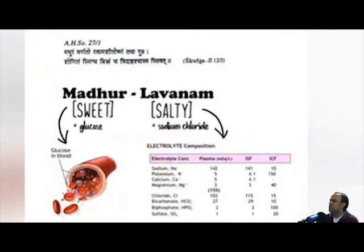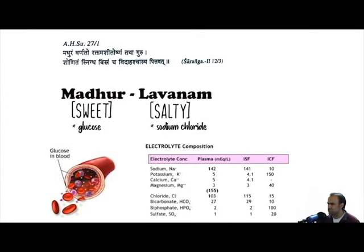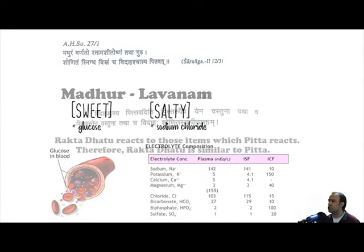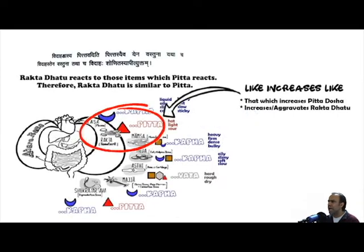Blood can also be characterized as sweet yet salty, which makes sense because glucose is obviously sweet, and certain electrolytes contained within blood — such as sodium and chloride — will obviously form salts. The properties of Raktadatu are similar to that of Pitta Dosha, and because of that, that which increases Pitta Dosha will tend to increase and aggravate Raktadatu.